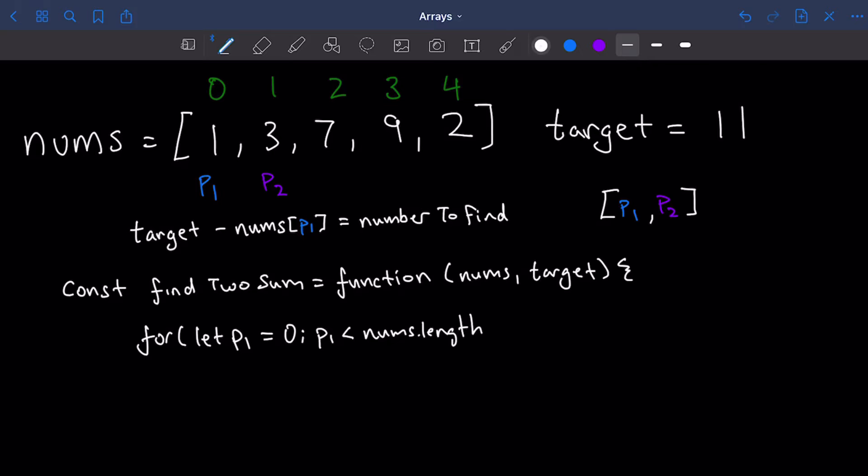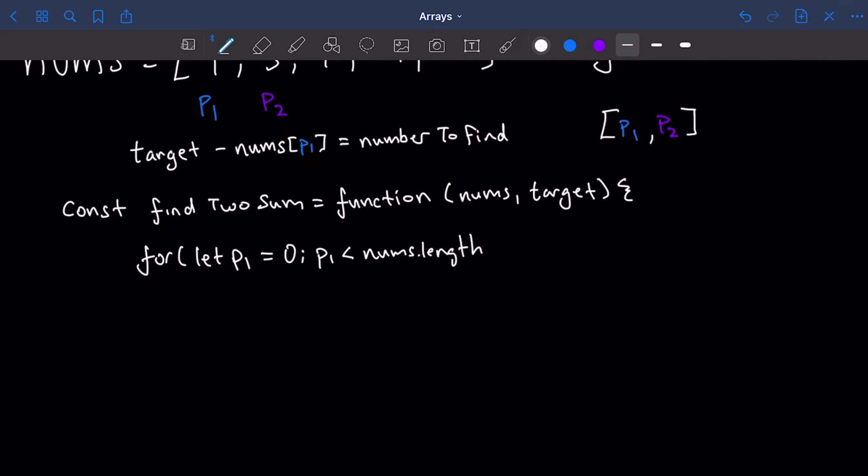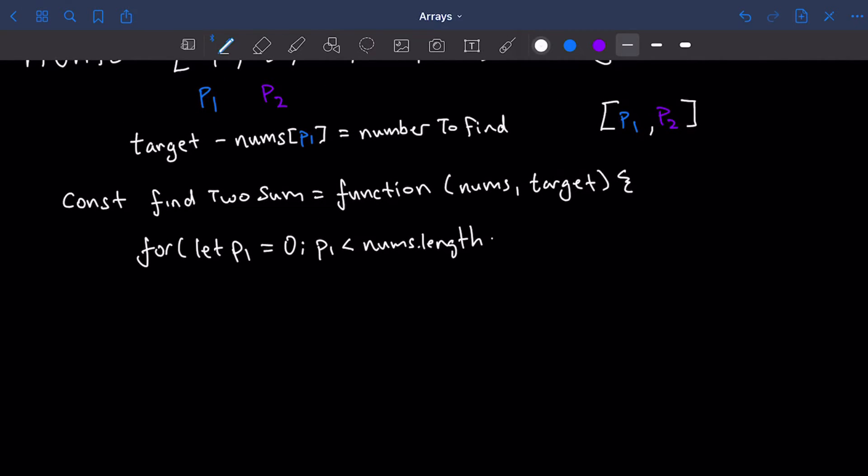The moment that p1 is equal to five, our for loop is going to break, it's going to exit. But as long as it's less than nums.length, we are going to do p1 plus plus.